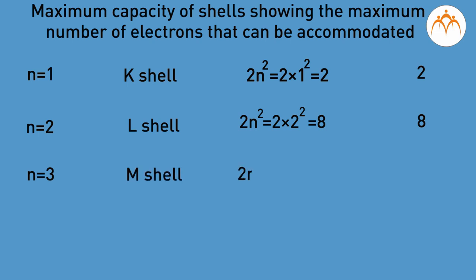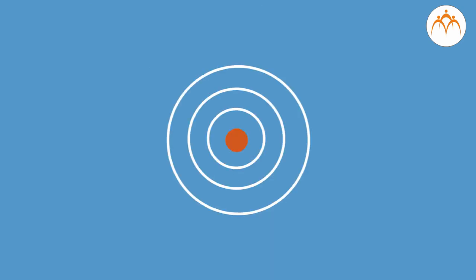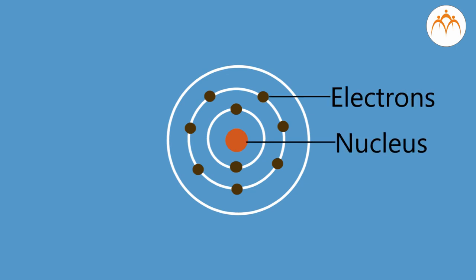the maximum number of electrons that can be accommodated equals 2n² = 2 × 3² = 18. For n = 4, that is N shell, 2n² = 2 × 4² = 32. Thus first shell can accommodate maximum of 2 electrons, second shell 8 electrons, third shell 18 electrons, and fourth shell 32 electrons and so on. But if second or third shell is the outermost shell, it can accommodate a maximum of only 8 electrons.